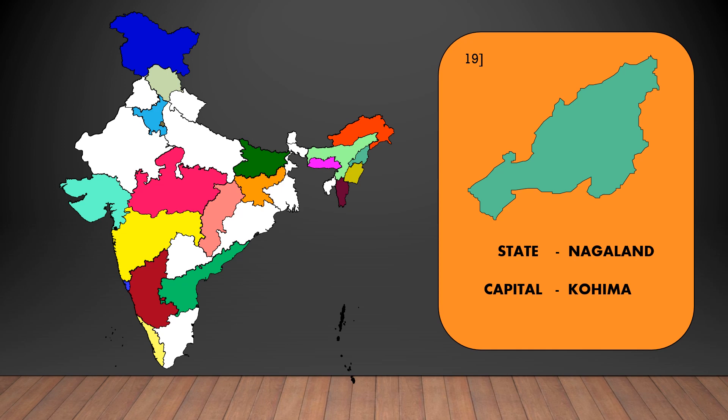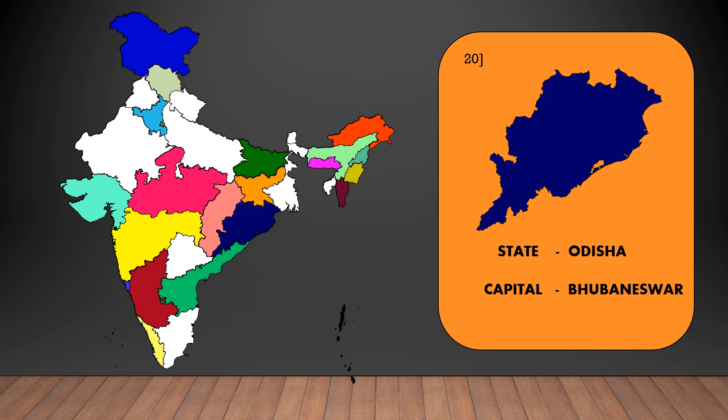The capital of Nagaland is Kohima. The capital of Odisha is Bhubaneswar.